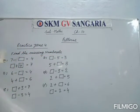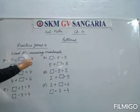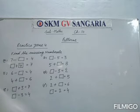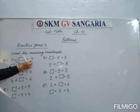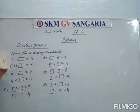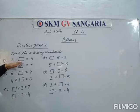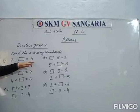Find the missing numerals. Question number 8: 7 minus fill in the blank is equal to 4.